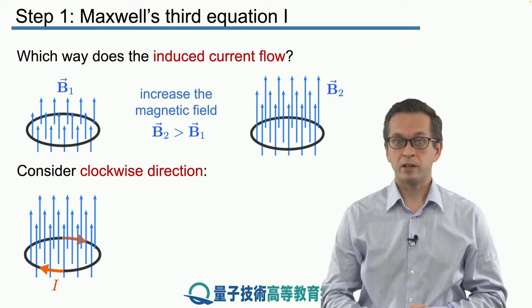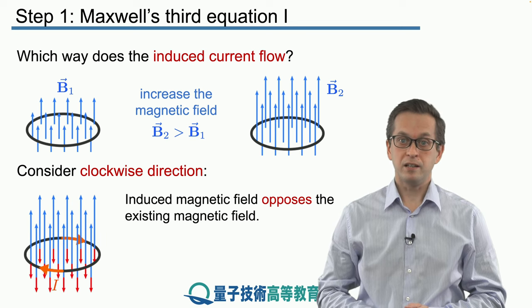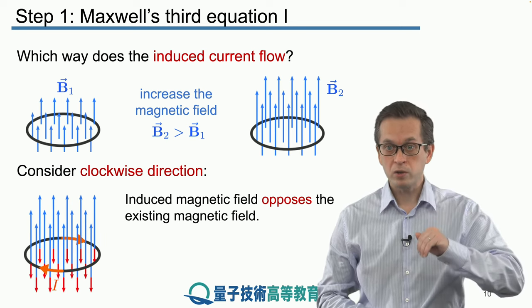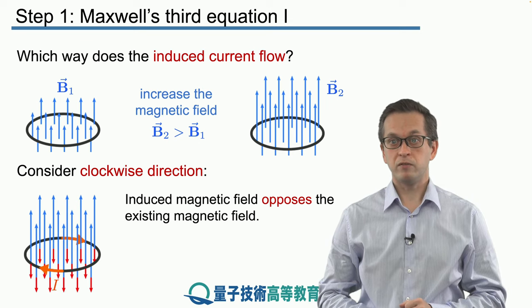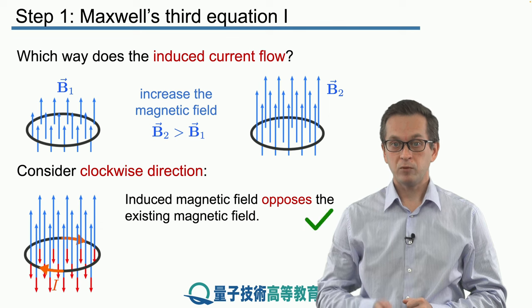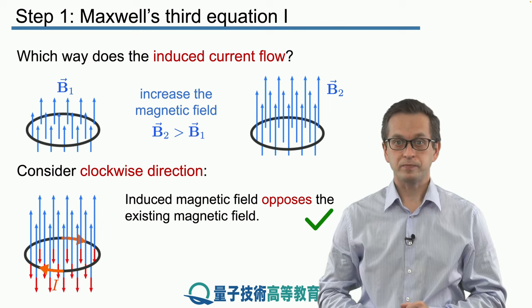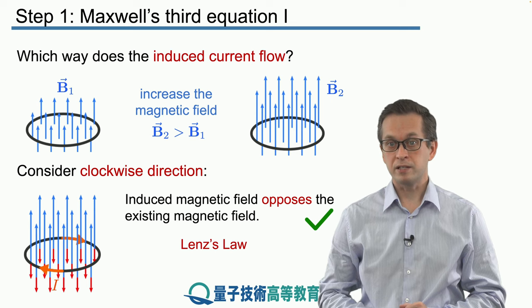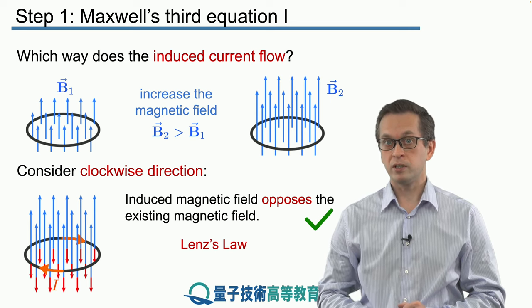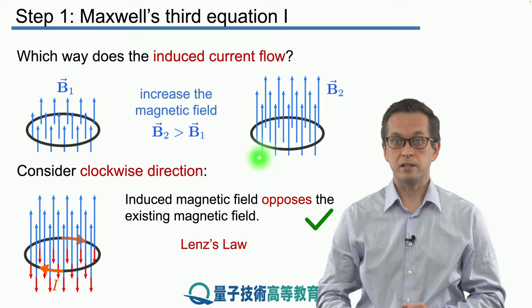Now what happens when the current is flowing clockwise? Immediately we see that the induced magnetic field now opposes the initial magnetic field causing the induced current. In that way, they balance out and everything is nice and physical. That explains why there is the minus sign for the electromotive force in front of the rate of change of the magnetic flux. This is known as Lenz's law.